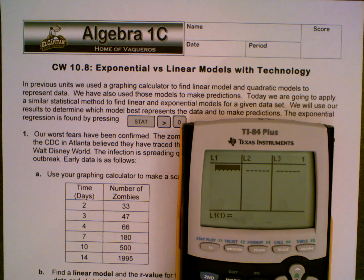Alright, from this point, we need to start inputting our data. So my list 1 is going to be my x values or my time values. I'm going to start with 2, enter. 3, enter. 4, enter. 7, enter. 10, enter. Then 14, enter. Perfect. Once I'm done with those, I'm going to hit the right button.